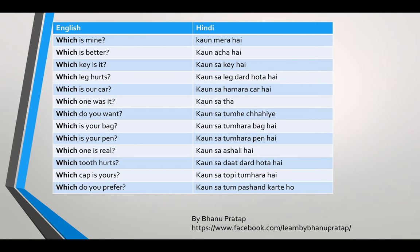Which leg hurts? The Hindi meaning of leg is 'pair', so 'korn sa pair dard hota hai'. Which is our car? 'Korn sa hamara car hai'. 'Our' means 'hamara' — it belongs to a family or more than one person. Which one was it? 'Korn sa tha'. Which do you want? 'Korn sa tumhe chahiye'. 'Want' means 'chahiye'.